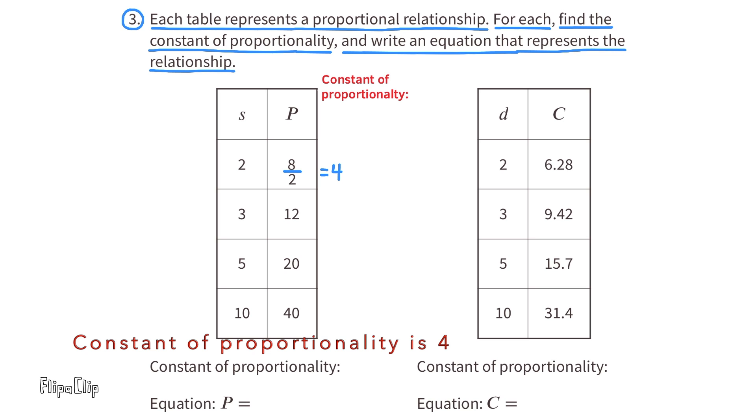We can test this out. The constant of proportionality times s equals p. 4 times 2 equals 8. We can show this relationship for all the values in the table. 4 times 3 is 12, 4 times 5 is 20, and 4 times 10 is 40. To write an equation that represents the relationship, we can substitute these terms with the variable s, and substitute these terms with the variable p. The equation reads 4 times s equals p, or 4s equals p. 4s equals p can also be written as p equals 4s.